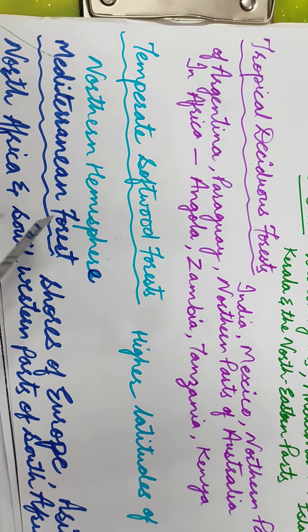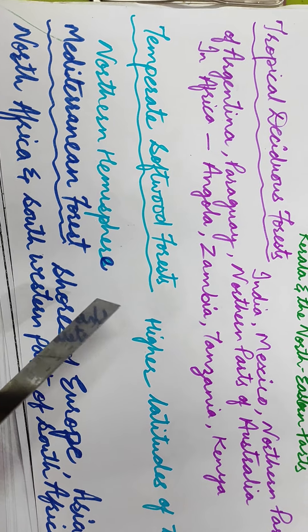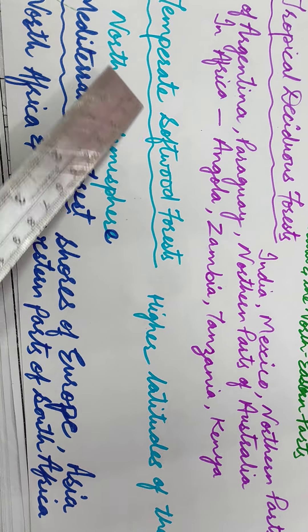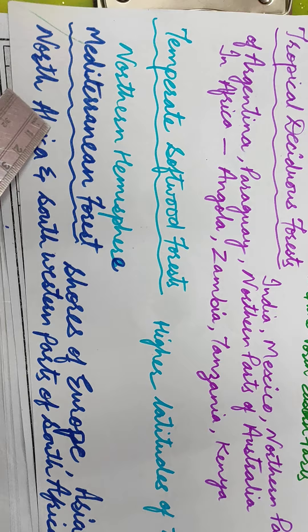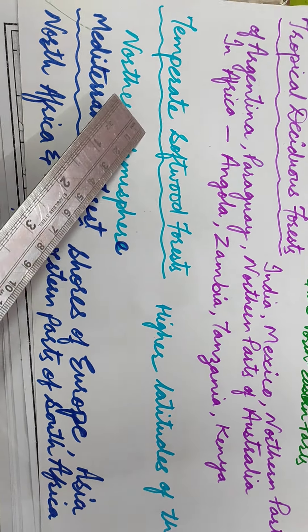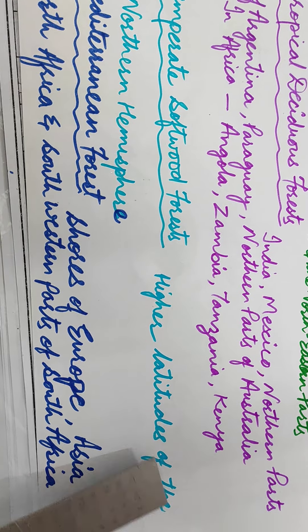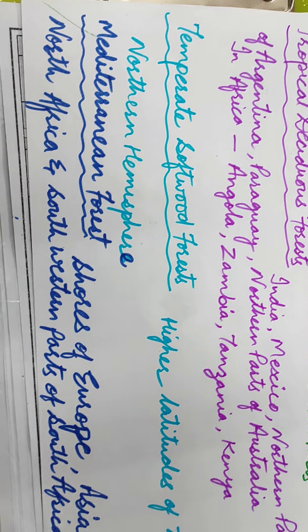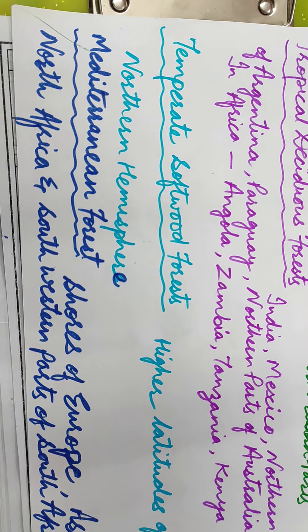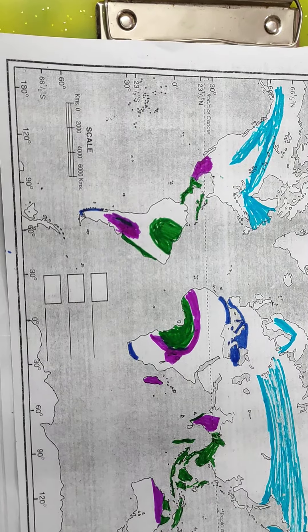So today we will practice two new forest maps. These are temperate softwood forests and Mediterranean forests. Temperate softwood forests are higher latitude in the northern hemisphere. Higher latitude means high mountains.